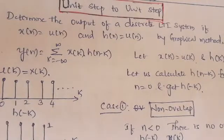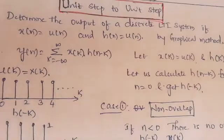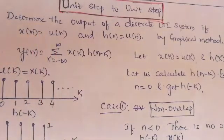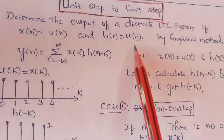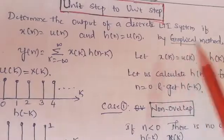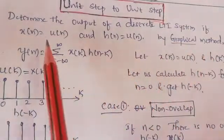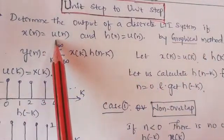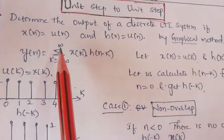Hi friends. In this video we'll discuss the convolution between a step signal and another step signal, and determine the output of a discrete LTI system where X(n) = u(n) and H(n) = u(n), using the graphical method. Both sequences are step signals.